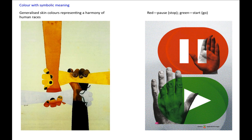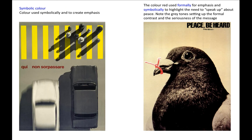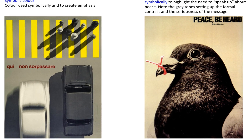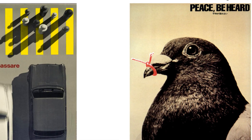Here are a couple of examples of color with symbolic meaning. The generalized skin colors representing the harmony of human races. The use of red to mean stop or pause, and green to mean start or go. Here symbolic color is also used for emphasis. The color red used formally for emphasis and symbolically to highlight the need to speak up about peace, with grey tones setting up the formal contrast and the seriousness of the message.